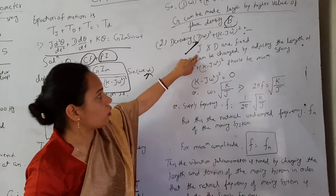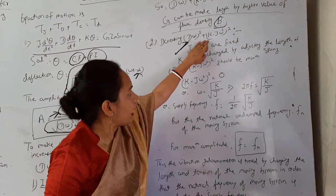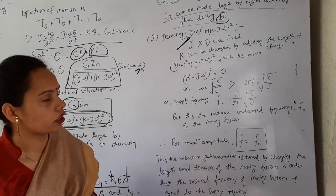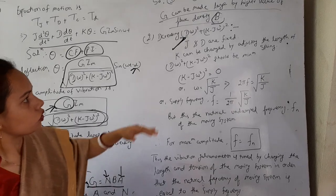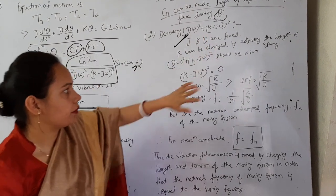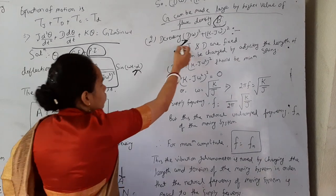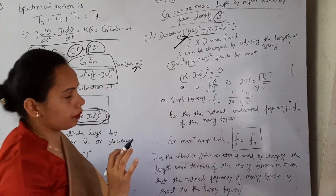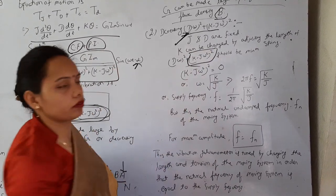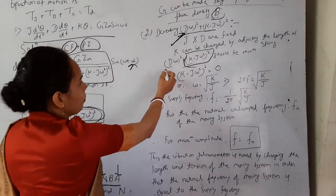Moment of inertia should also be constant. But we can design a spring or we can change the length of a spring or suspension so that the controlling constant can be changed. So the whole value should be minimum. So for minimum value, we can put this value should equal to 0 so that it will become minimum.